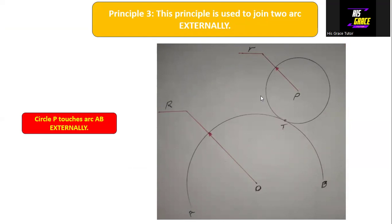Here is another diagram showing what is important for us to know when it comes to the application of the principle of tangency in solving a tangency problem. Circle P touches arc AB externally — circle P is positioned on the external part of arc AB. It is positioned on the external part of arc AB, or it touches arc AB externally.